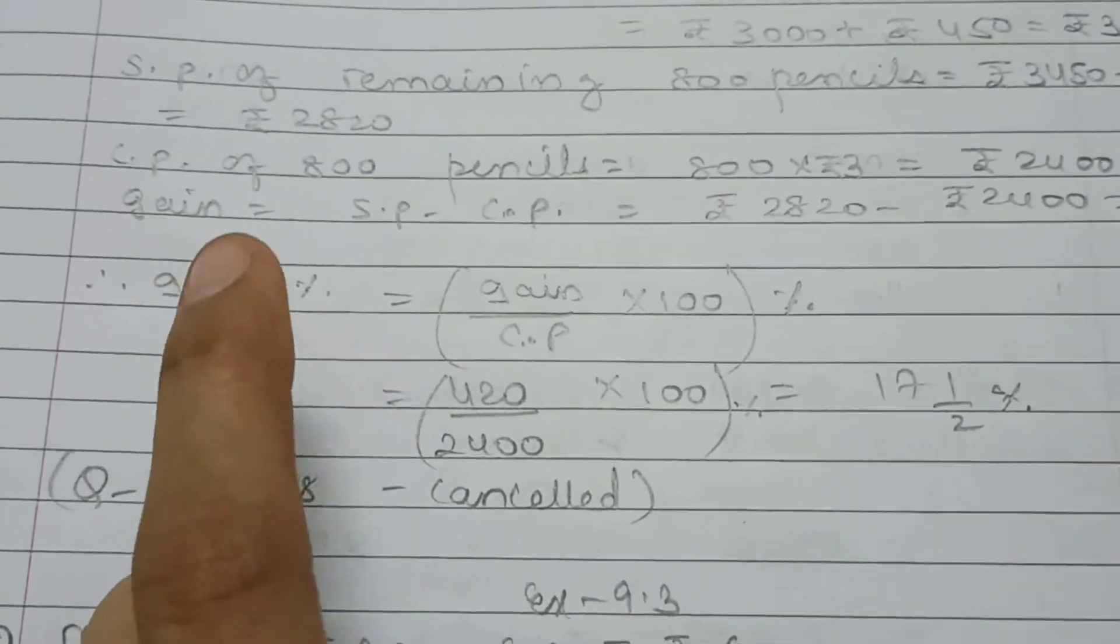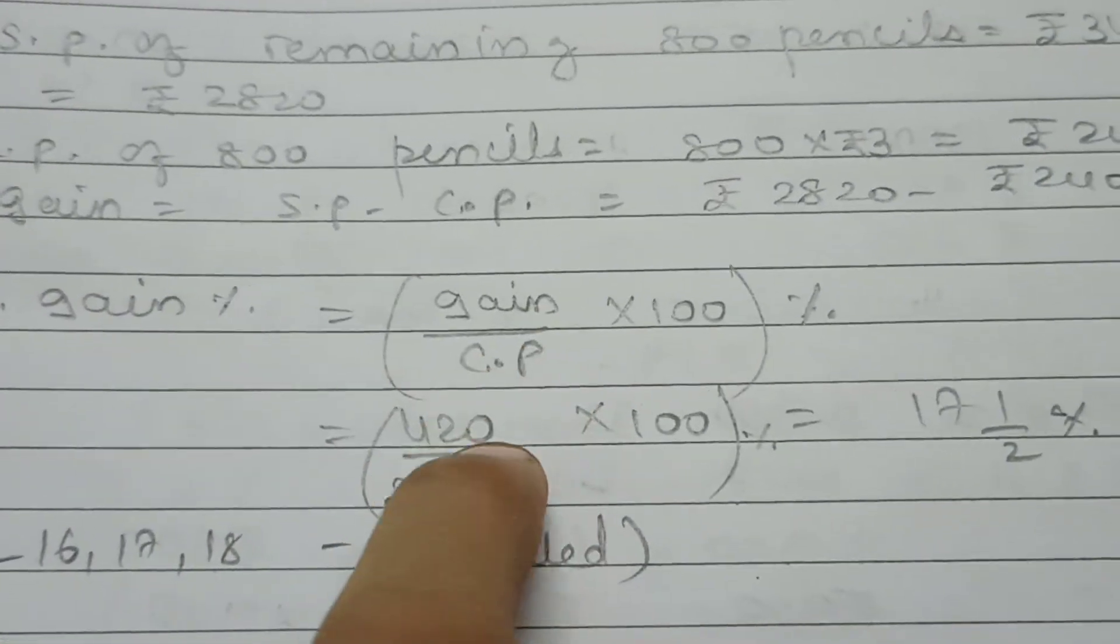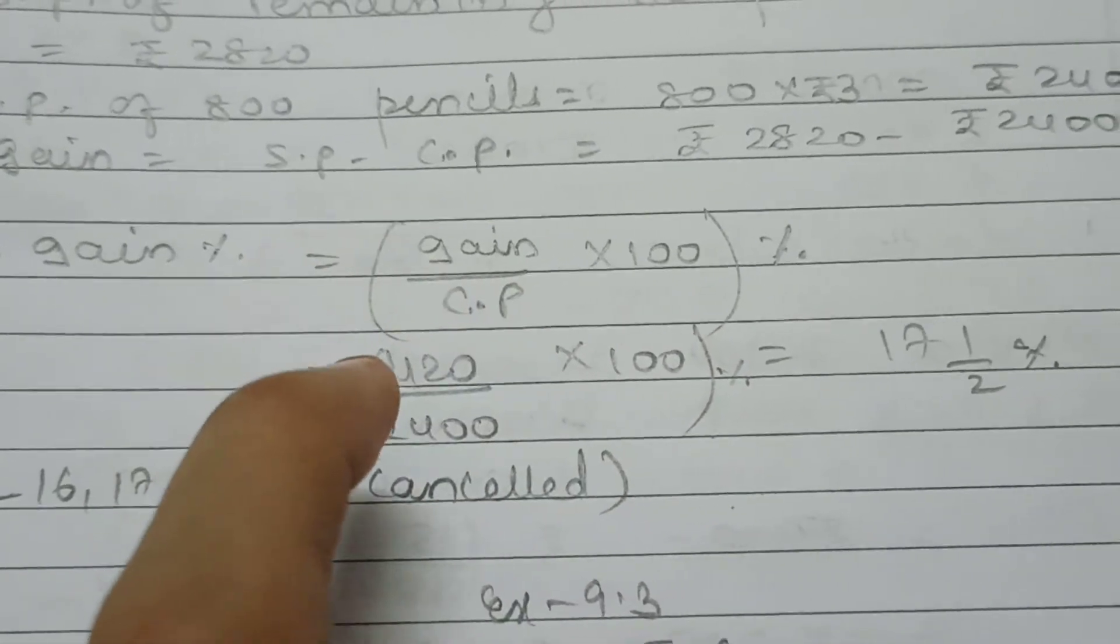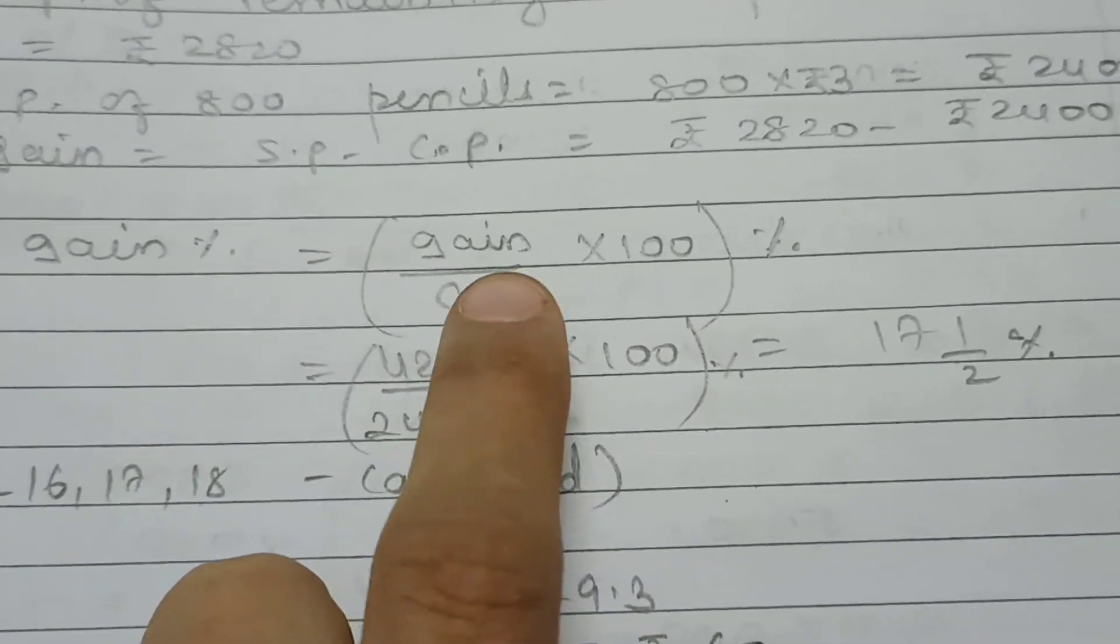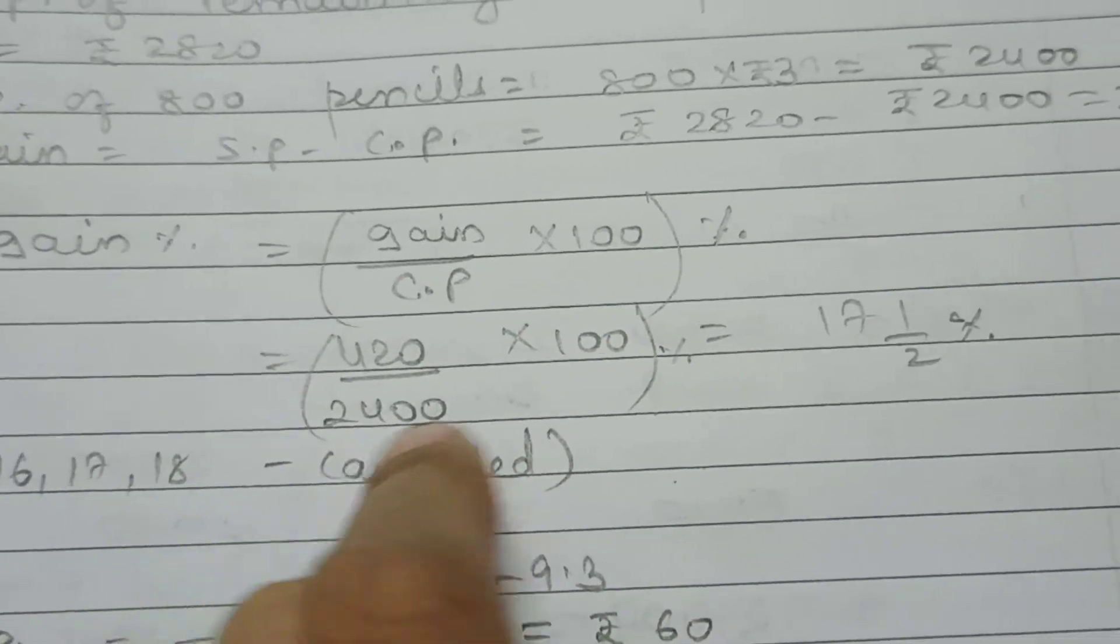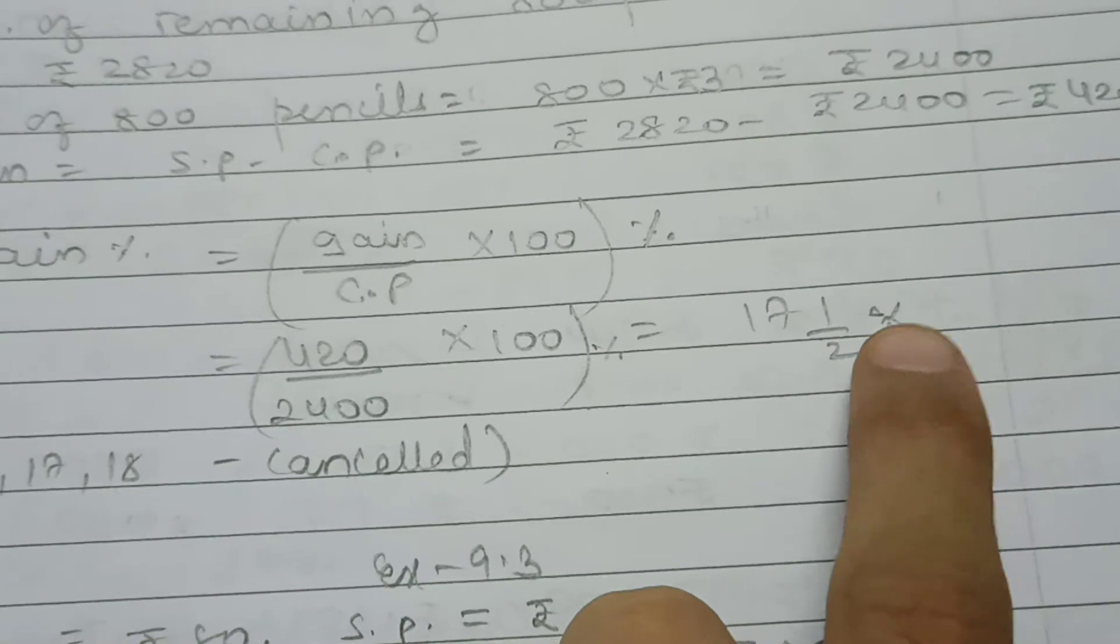We need to calculate in percentage. Gain percentage equals gain upon CP multiplied by 100. Gain is 420, so 420 upon 2400 CP. After cancellation, 420 by 24 equals 17 and half percentage.